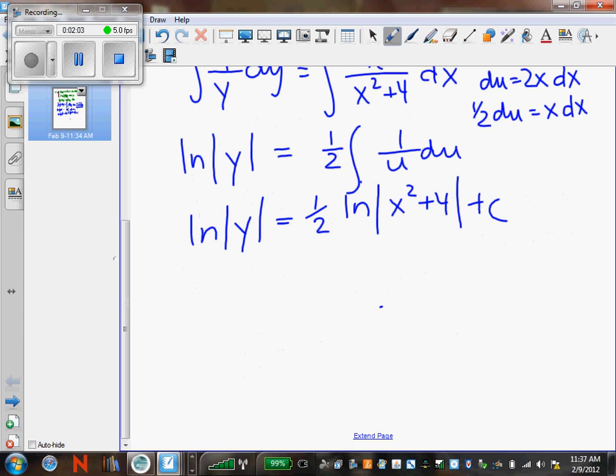So I will have e raised to the 1 half natural log of the absolute value of x squared plus 4 plus c equals y.